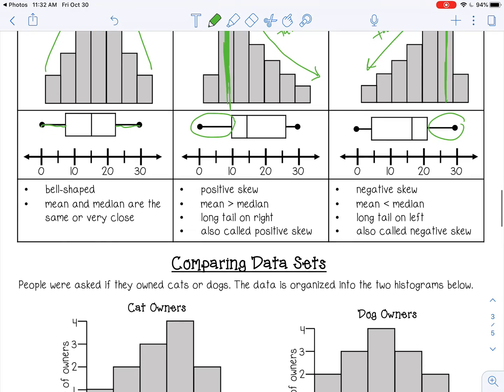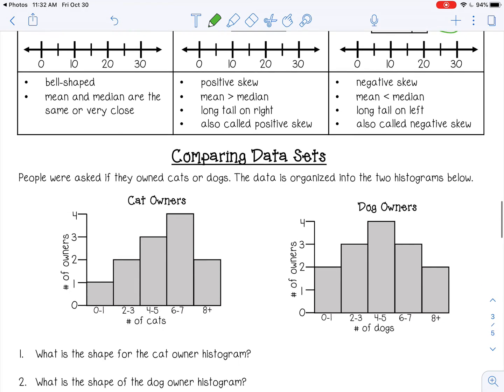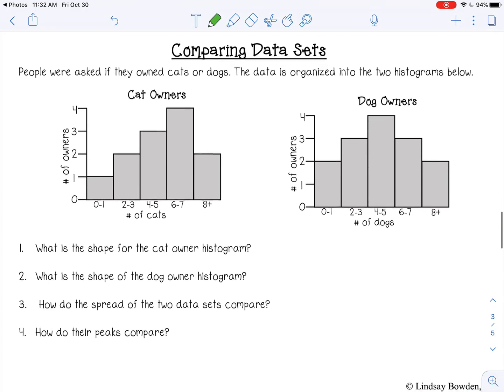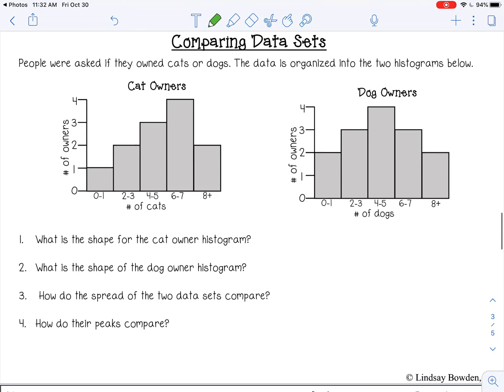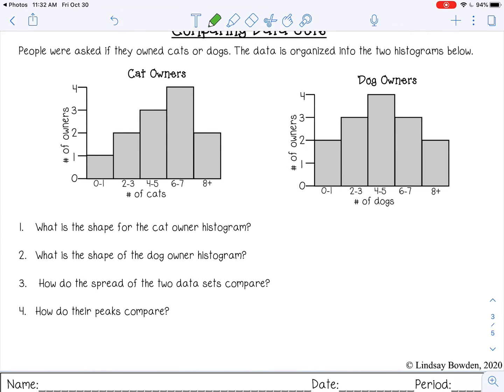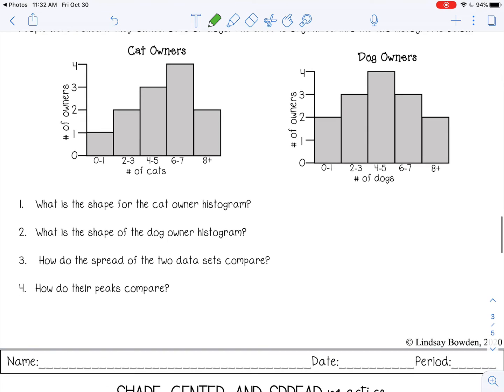All right, so let's compare some data sets. So people were asked if they owned cats or dogs. The data is organized into two histograms below. So we have cat owners and dog owners.